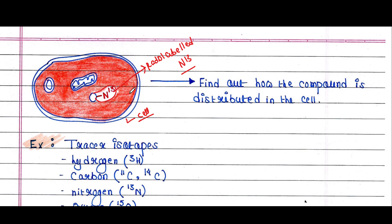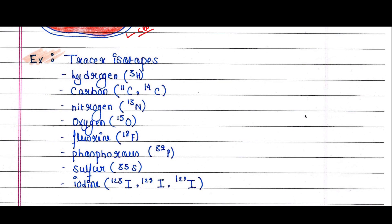Okay, now there are many such tracer isotopes. For example, hydrogen 3H, carbon 11C, 14C, nitrogen 13N.